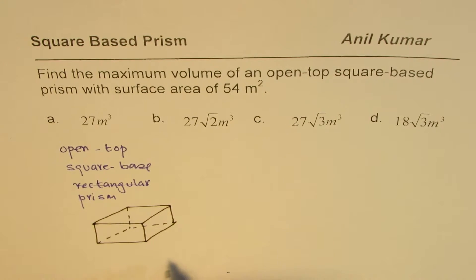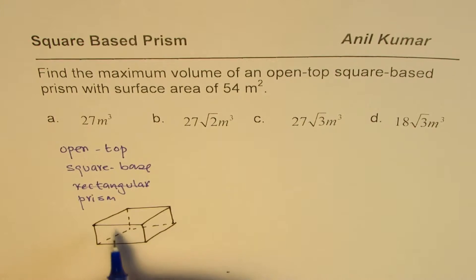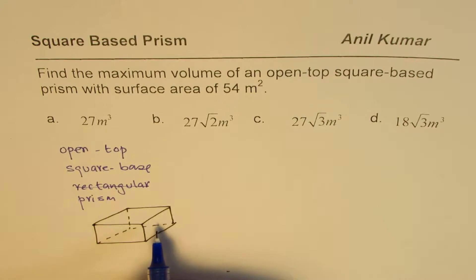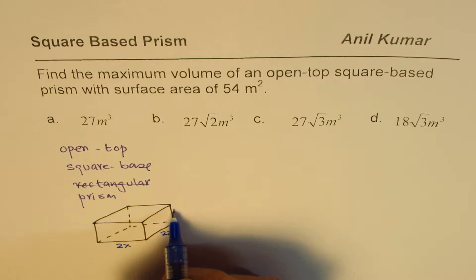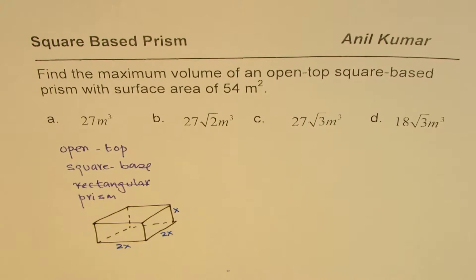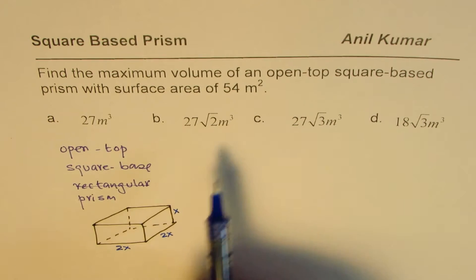So what do you understand: for a fixed area, the dimensions which give you maximum volume are kind of like this—that the base is twice the height.